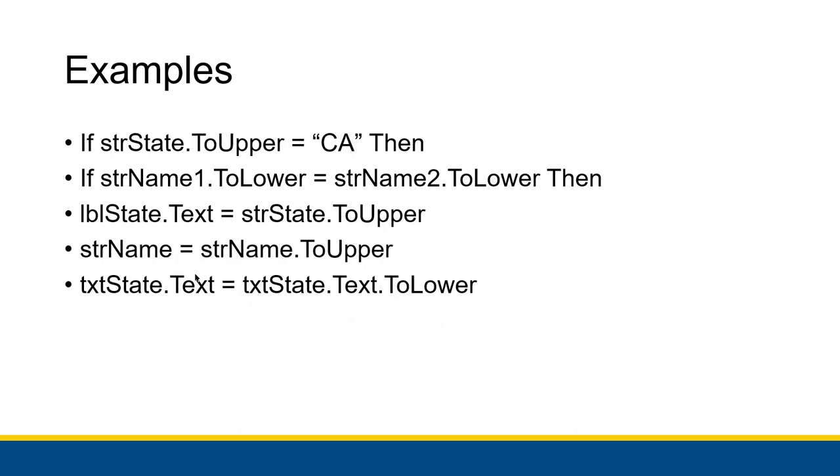And then we have some examples of using ToUpper and ToLower to modify a variable's actual value. strName equals strName.ToUpper. That actually changes strName. strName.ToUpper doesn't change it by itself, but then we take that value and then set strName equal to that value. We put that value and set strName. And now the name with weird capitalization and all that kind of stuff is completely replaced by that name but all uppercase.